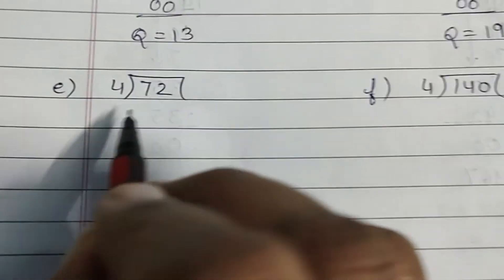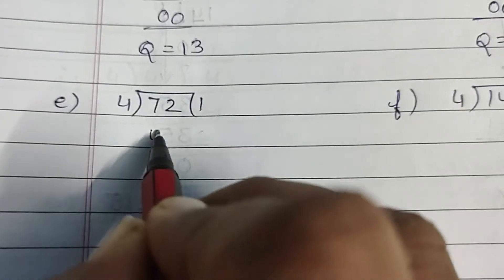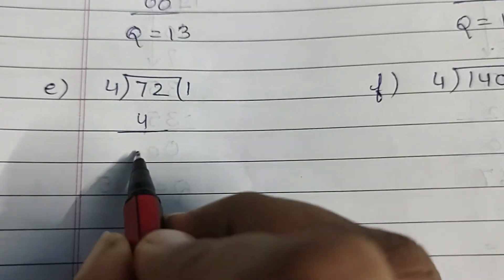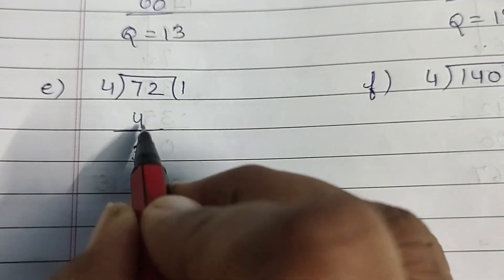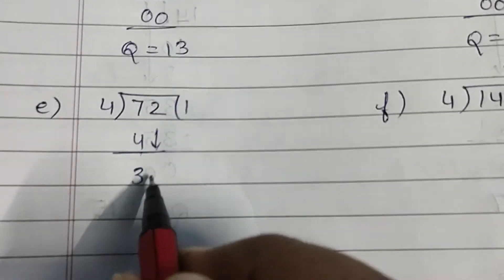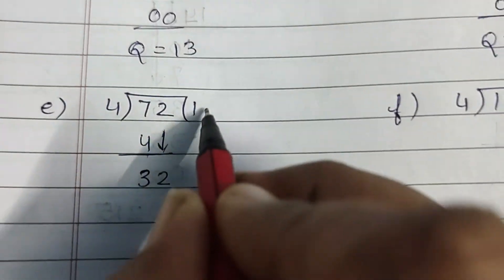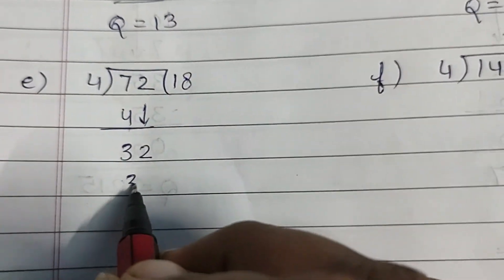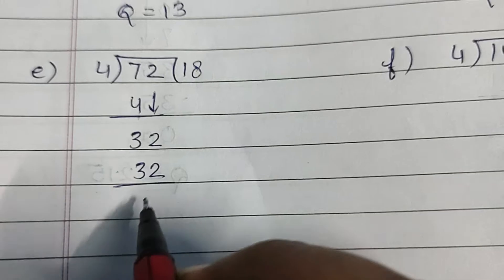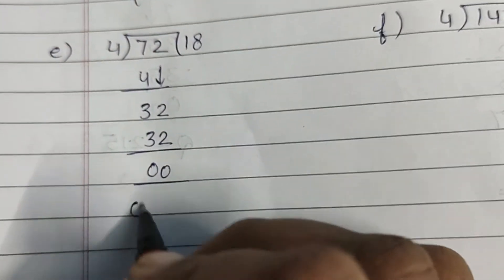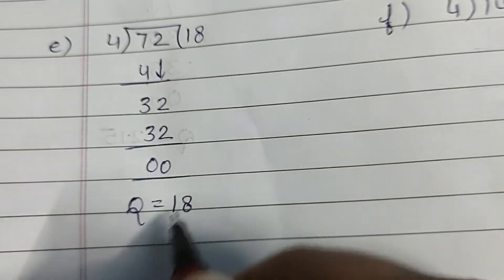Now 4×1, 4. 7 minus 4, 3. Bring 2 down, ban gaya 32. 4×8, 32. 32 minus 32, 0. Quotient 18.